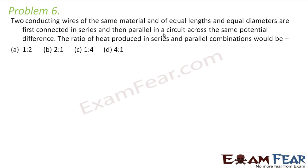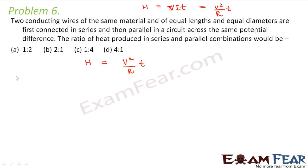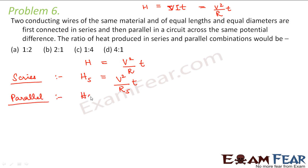Two conducting wires of the same material and of equal lengths and equal diameters are first connected in series and then in parallel in a circuit across the same potential difference. The ratio of heat produced in series and parallel combinations would be which option? We know that heat produced is given by V squared by R into T, because as per Joule's law of heating, heat produced is V into I into T, and applying Ohm's law we get V squared by R into T. So heat in series HS equals V squared divided by RS into T, and heat in parallel HP equals V squared divided by Rp into T.